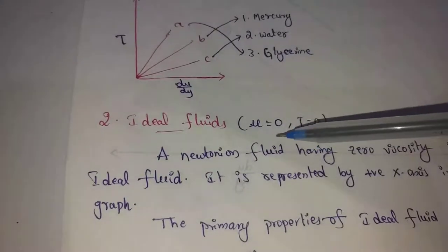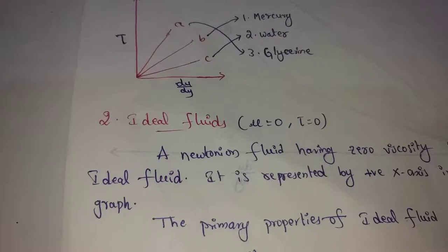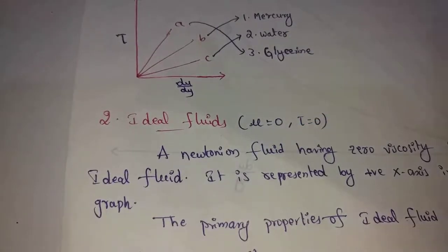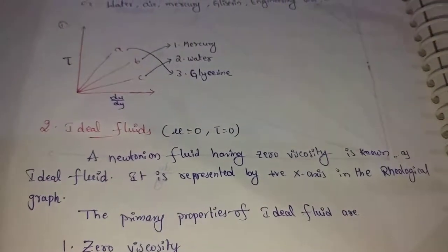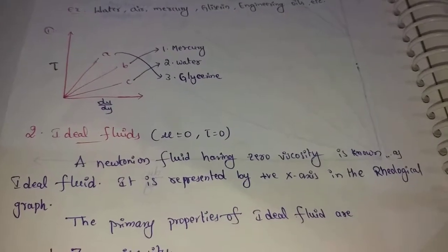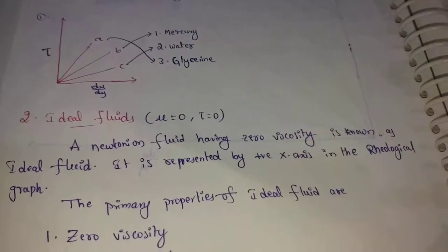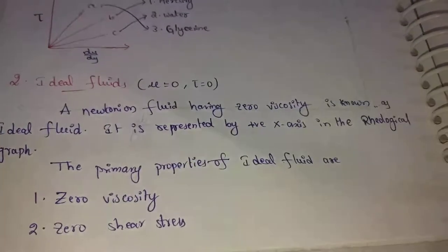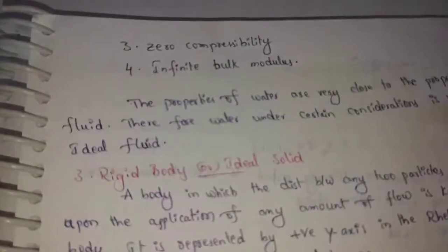Ideal Fluid: viscosity is zero. Zero viscosity is known as Ideal Fluid. Primary properties of Ideal Fluid are: zero viscosity, zero shear stress, and zero compressibility — that is, infinite bulk modulus.